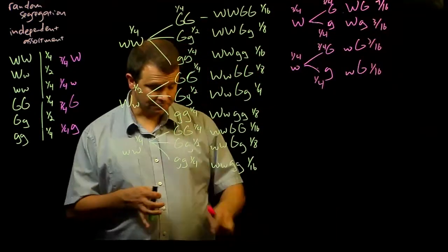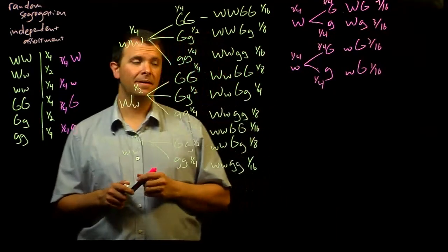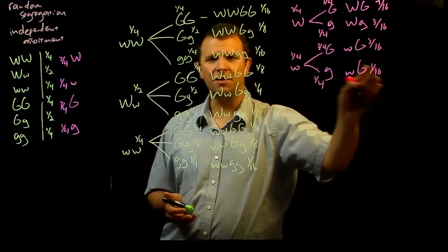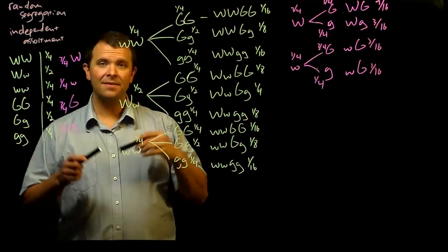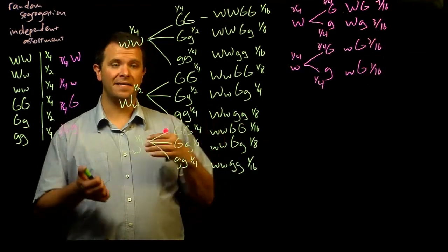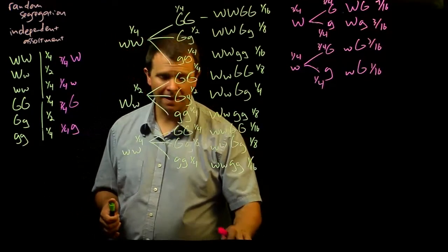And if you've been staring at some four by four Punnett squares, you know that this 9 to 3 to 3 to 1 ratio is the traditional phenotypic ratio outcome for a di-hybrid cross.